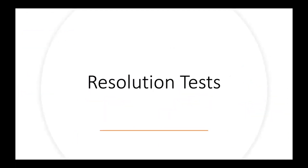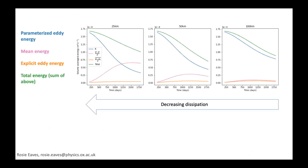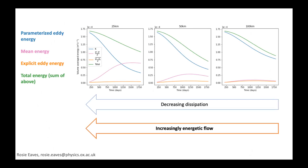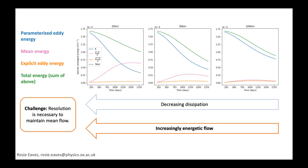Tests at different resolutions: 100 km on the right, 50 km in the middle, and 25 km on the left. Blue is parameterized eddy energy, pink is mean energy, orange is explicit eddy energy, and green is total energy. As resolution increases, dissipation decreases and we get a more energetic flow because bi-harmonic diffusion damps less. However, this means there are resolution requirements necessary to maintain even the mean flow, which is a challenge.